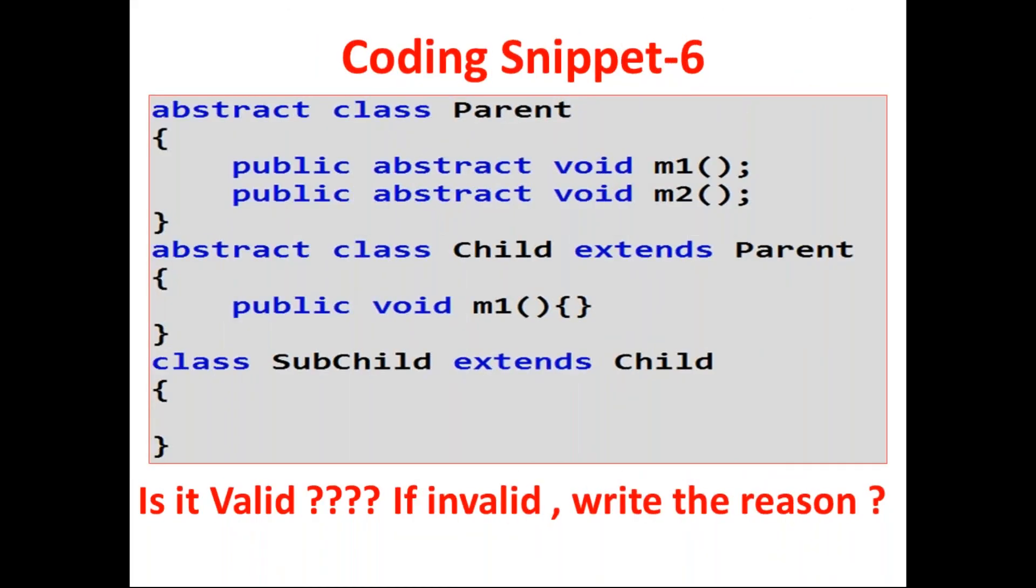Now this may be the last one, friends. Abstract class Parent contains two abstract methods. Abstract class Child extends Parent contains only one abstract method. What about class GrandChild which is the child class of Child class? Now it doesn't contain anything. Can you please tell is this coding snippet valid or not?